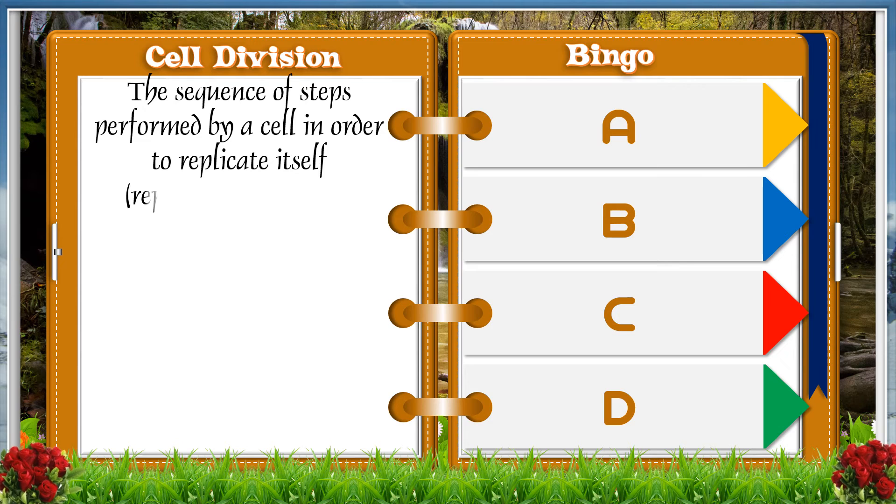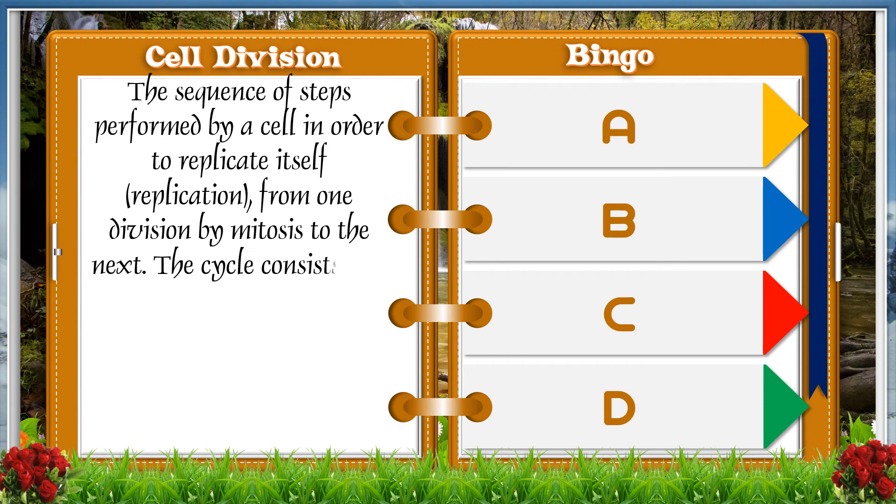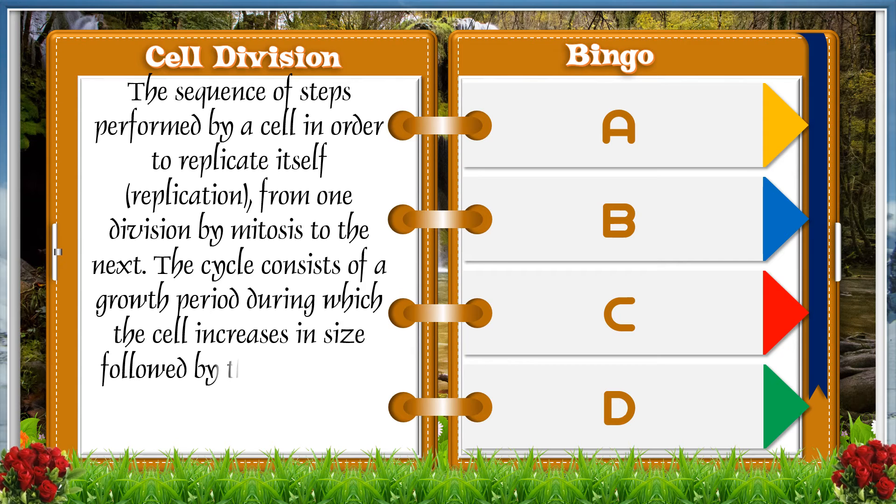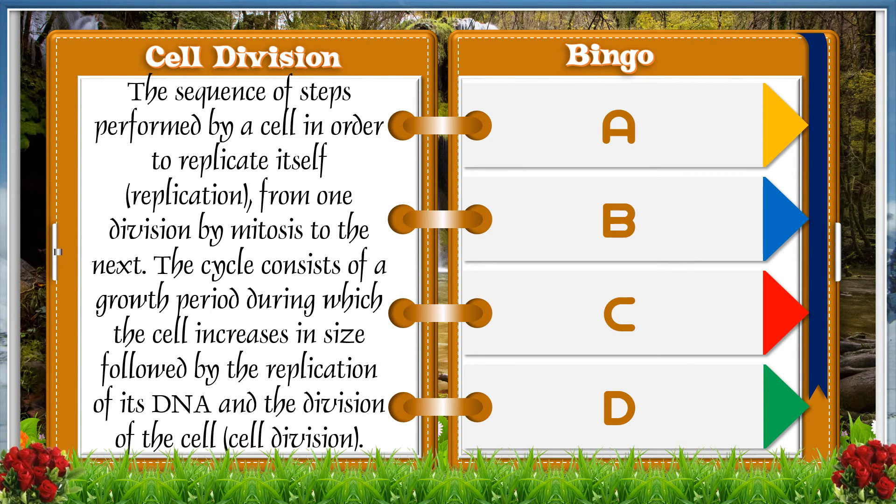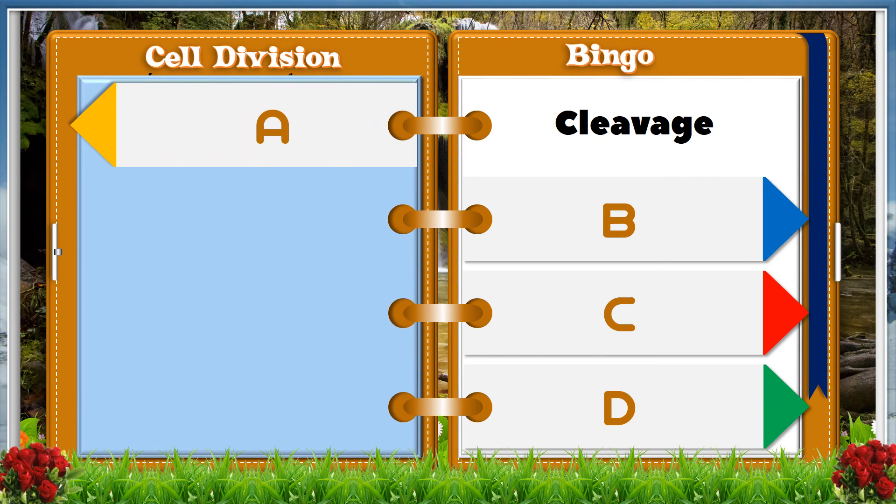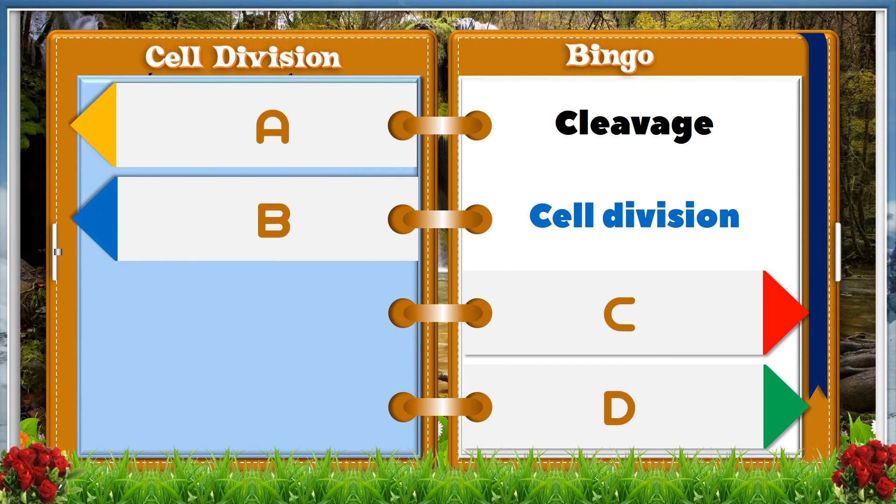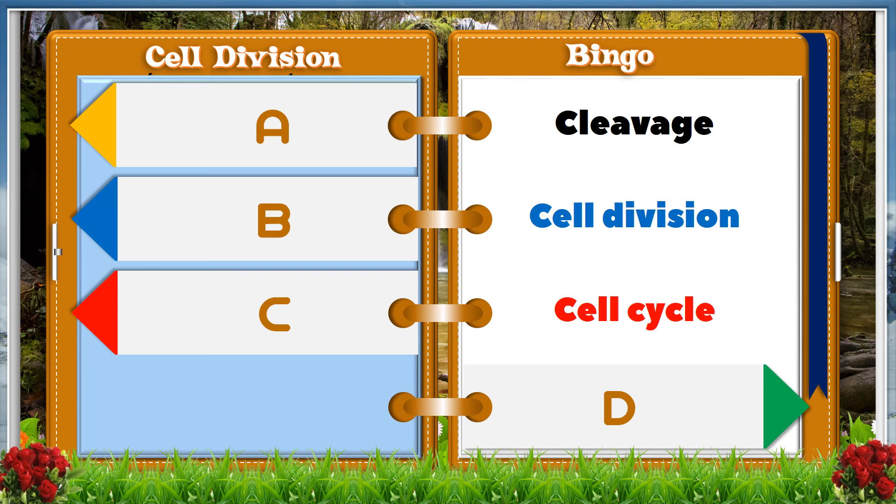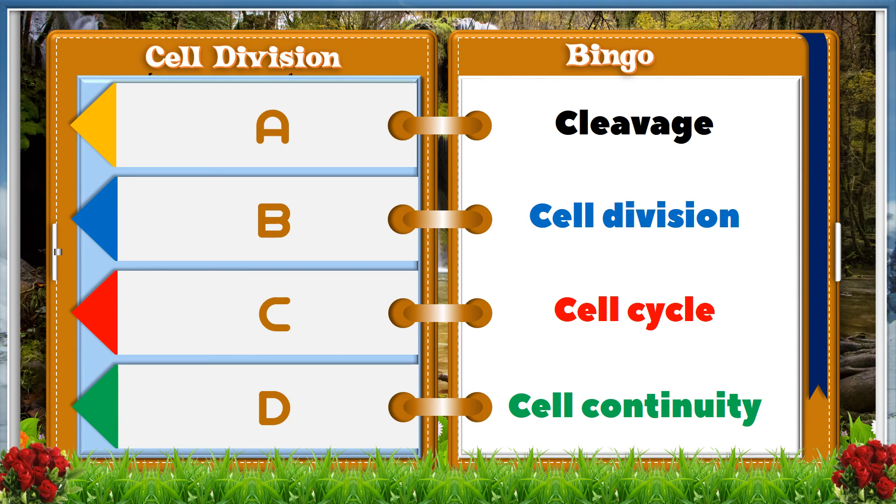The sequence of steps performed by a cell in order to replicate itself from one division by mitosis to the next. The cycle consists of growth period during which the cell increases in size, followed by the replication of its DNA and the division of the cell. A cleavage, B cell division, C cell cycle, D cell continuity.